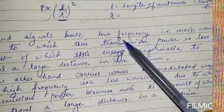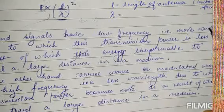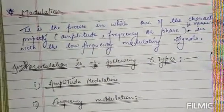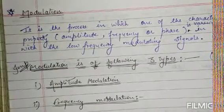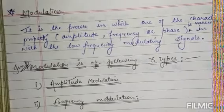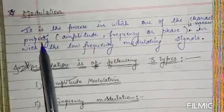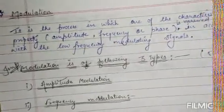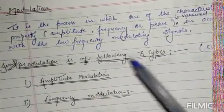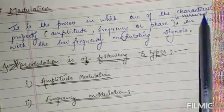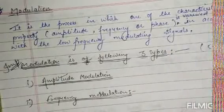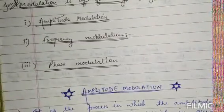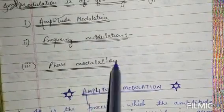Modulation is a process in which one of the characteristic properties — amplitude, frequency, or phase — is varied in accordance with the low-frequency modulating signal. Modulation is of three types: amplitude modulation, frequency modulation, and phase modulation. This is a very important topic and comes under five marks.